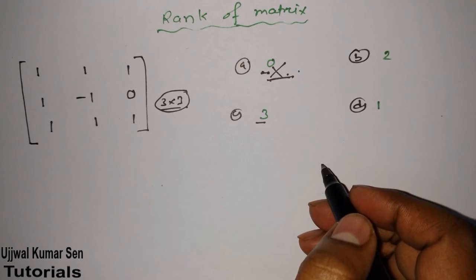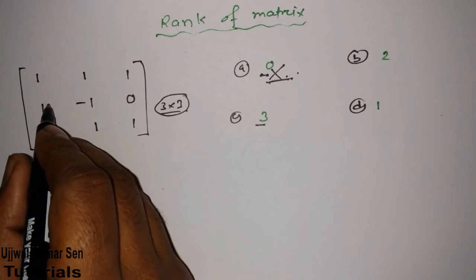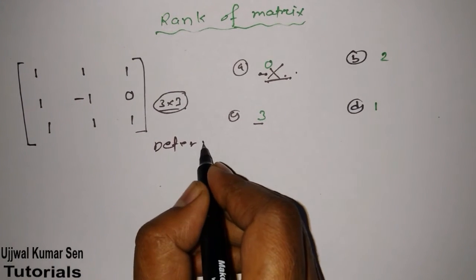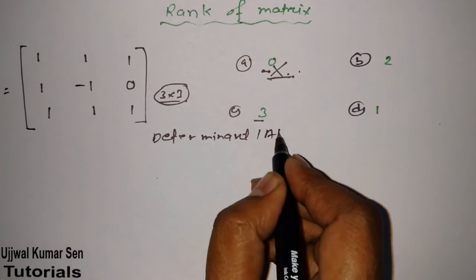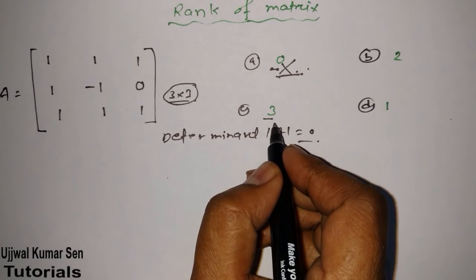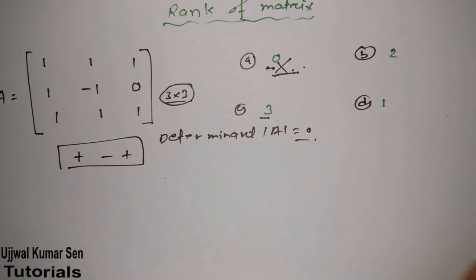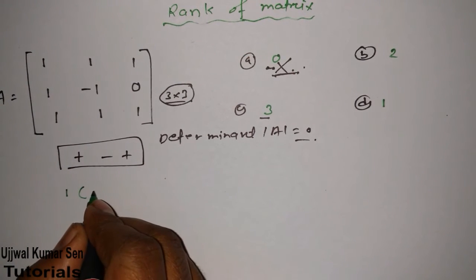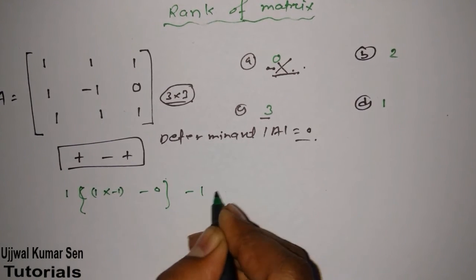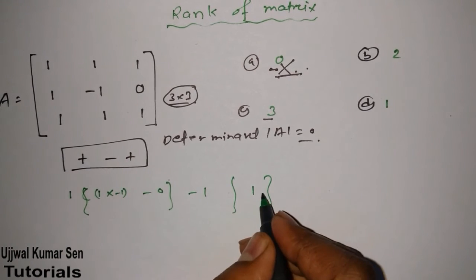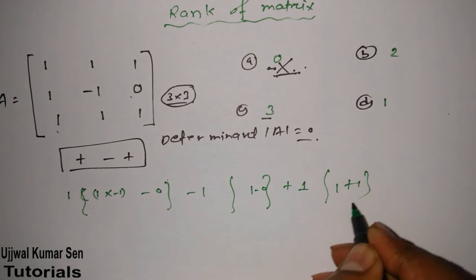Let's find out the determinant of this. Suppose that determinant of A is zero, that means this is not a 3 by 3 matrix. Now find out the determinant. We'll follow this rule: plus, minus, plus. So what's that? 1, 1, 1 multiplied by minus 1 minus 0, minus 1, 1, 1 minus 0, and plus 1, 1 plus 1.